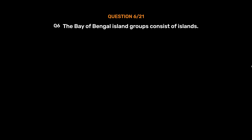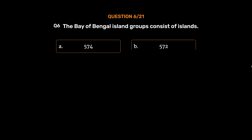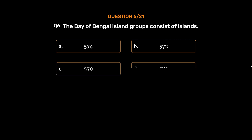Question number 6: The Bay of Bengal island groups consist of how many islands? Option A: 574. Option B: 572. Option C: 570. Option D: 580. The correct answer is Option B, 572.